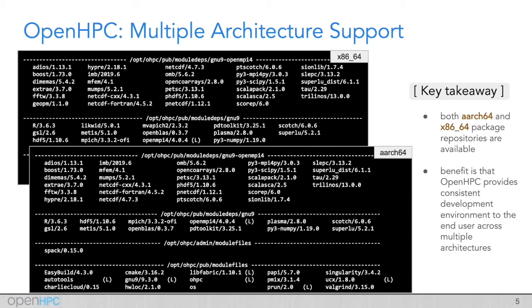which is basically all the software that might be exposed to the end user. And the point being that the environment looks exactly the same between multiple architectures. That's really one of the key benefits of OpenHPC: trying to provide a consistent development environment across multiple distros and multiple architectures.